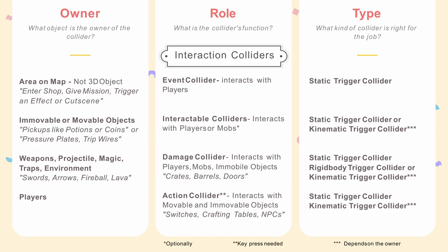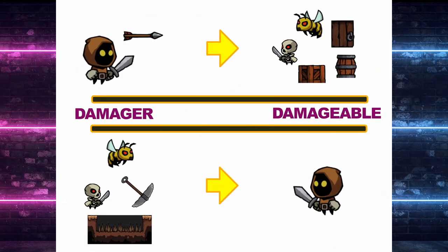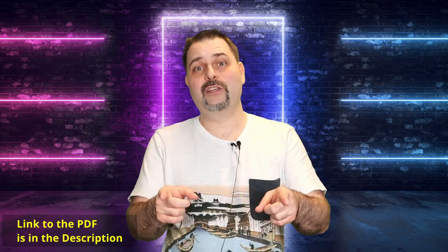Using these roles will allow us to write simple reusable code to handle interactions between game objects, like one pair of damager and damageable scripts, which can be added to any players, monsters, barrels, or traps. However, you probably noticed some objects like the player need colliders of multiple roles. In my next video I will show how to organize these into a collider stack structure. Please subscribe to get notifications for future videos. Thank you for watching and see you next time!